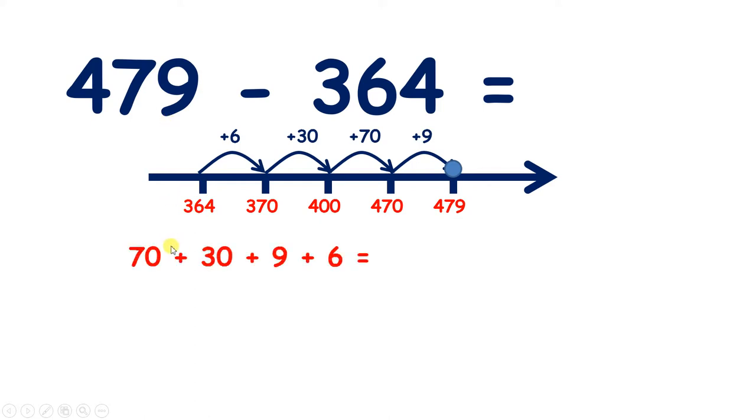So we added 70, 30, 9, and 6. 70 plus 30 is 100, and 9 plus 6 is 15. So altogether we added 115, so that's our answer.